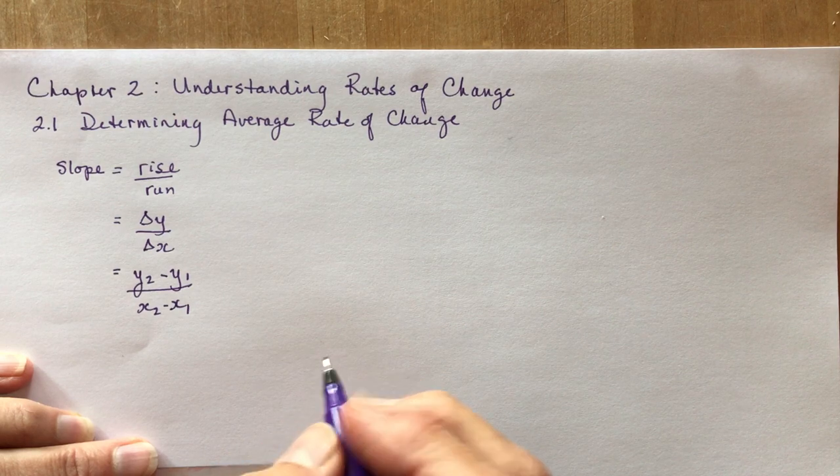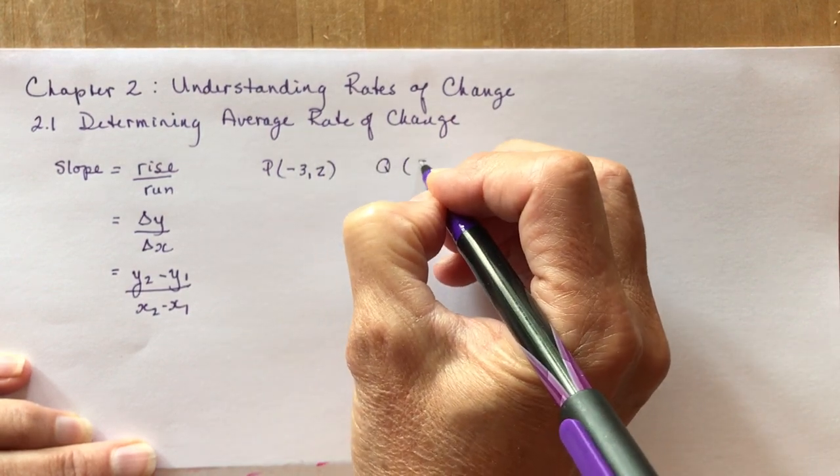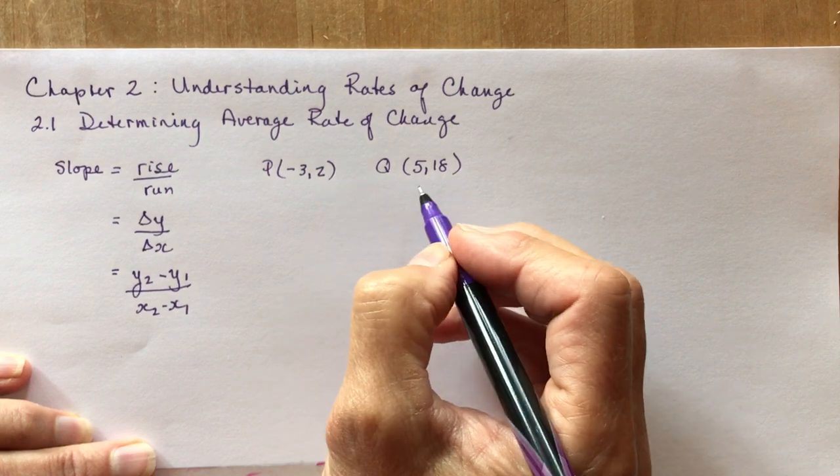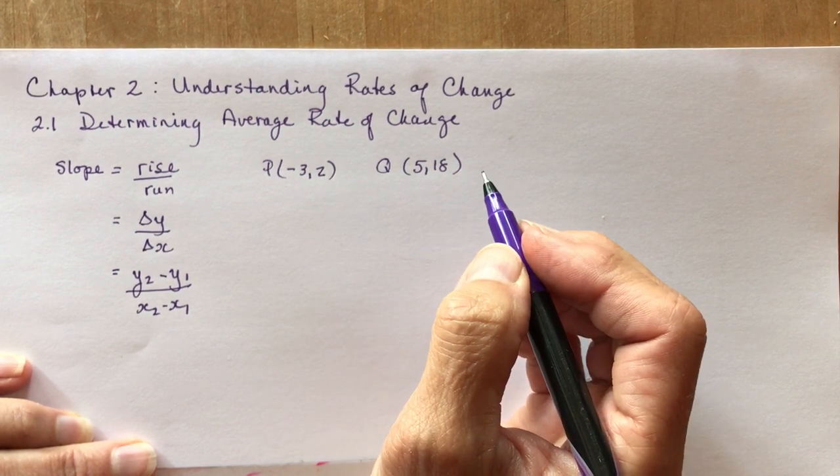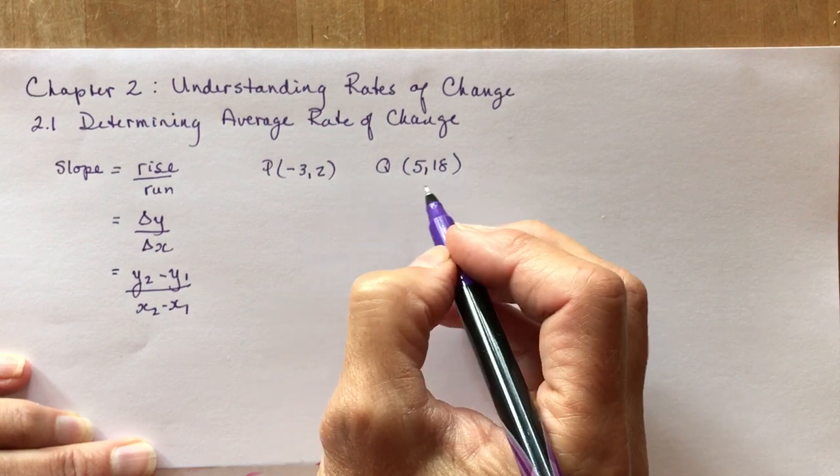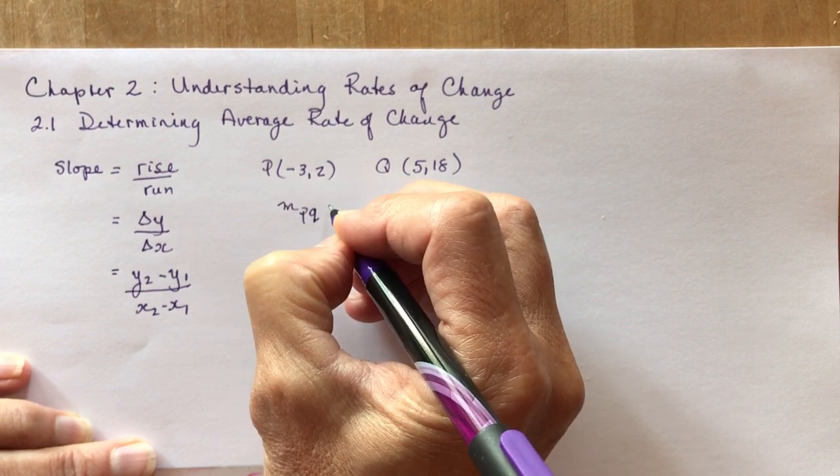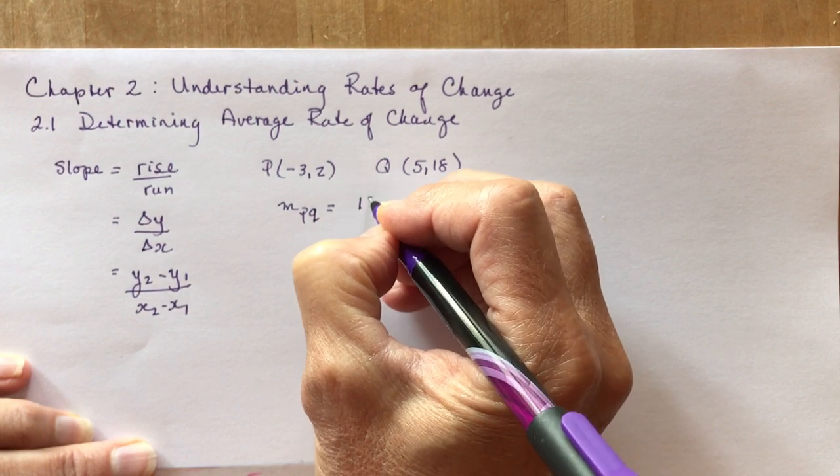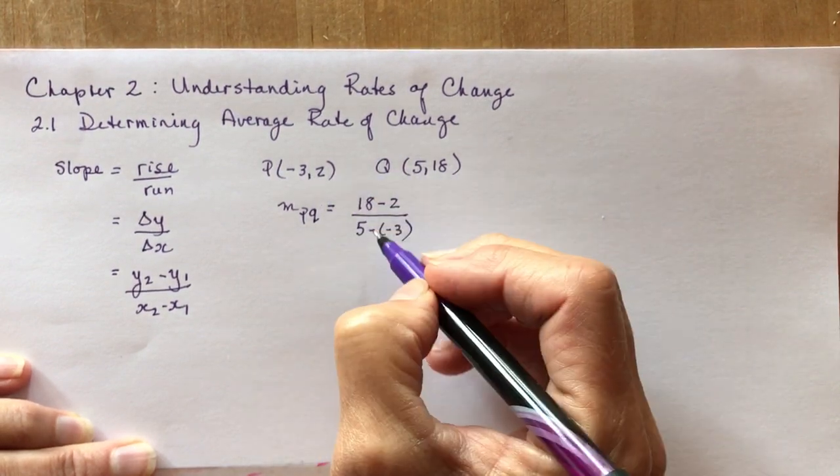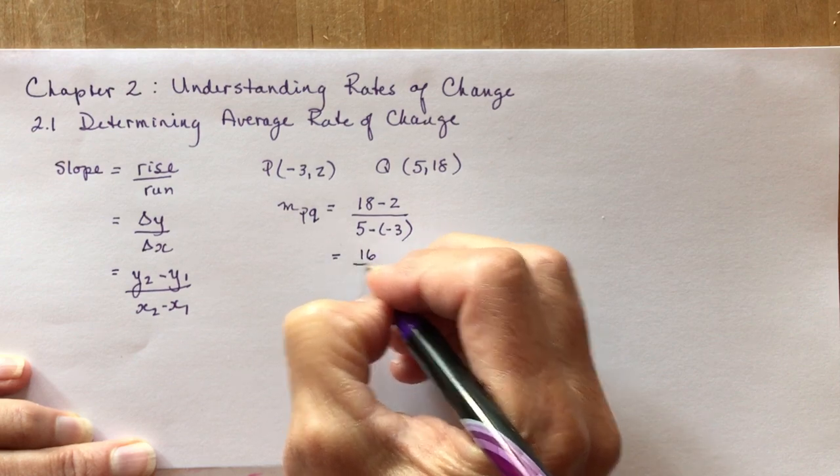So again if we had, let's say we had two points and I said I have the point minus 3 and 2 and point Q is going to be 5 and 18. And I want to know what is the rate of change over these two points. Now these two points don't have to be on a line, right? They could be on a curve. If I just give you two points, you don't know if they're points on a line or points on a curve. But still if I want to find the rate of change between these two points, all I have to do is I'd say the slope of PQ is rise over run. So I'm going to do 18 minus 2 over 5 minus, be careful, minus 3. Now remember it doesn't matter which point you start with as long as you start with both coordinates first. So 18 minus 2, 5 minus minus 3, that's going to give me 16 over 8 is 2.